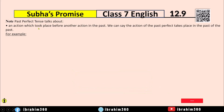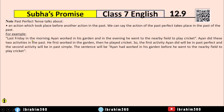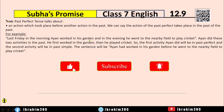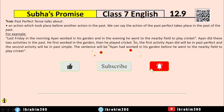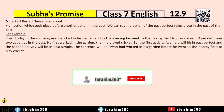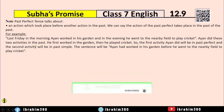Past Perfect Tense describes an action which took place before another action in the past. We can say the actions of the Past Perfect take place in the past of the past. For example: Last Friday in the morning, Iyan worked in his garden, and in the evening he went to the nearby field to play cricket. Iyan did these two activities in the past — he first worked in the garden, then he played cricket. So the first activity Iyan did will be expressed in the Past Perfect.